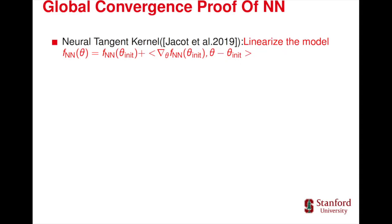There are two regimes to develop global convergence proof for optimizing overparameterized neural networks. The first one is called Neural Tangent Kernel. In this regime we linearize the non-linear model and training the network is equivalent to optimizing a kernel model. The advantage of this regime is that it can provide proof of convergence for any structure of NN.